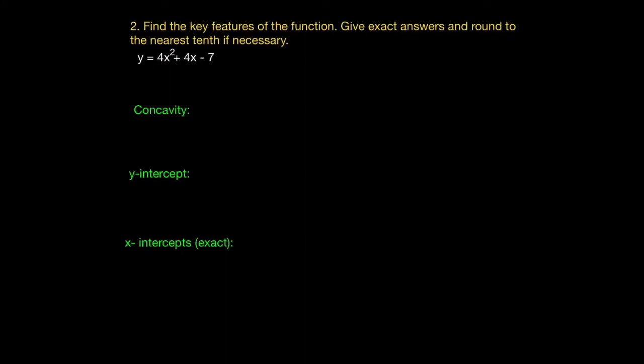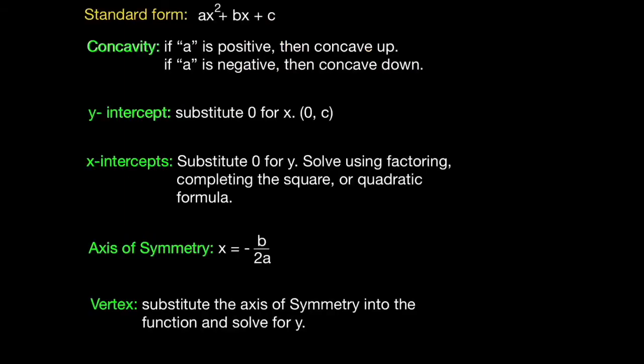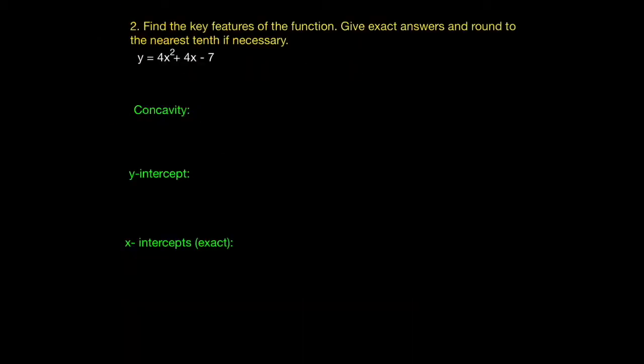Let's move on to example 2: find the key features of the function and give exact answers, rounding to the nearest tenth if necessary. We're going to find six features. Let's begin with the concavity. The concavity is determined by the a value. If a is positive, then we have concave up. If a is negative, then we have concave down.